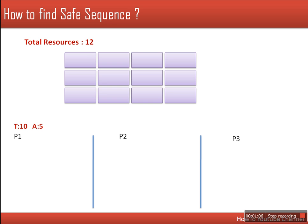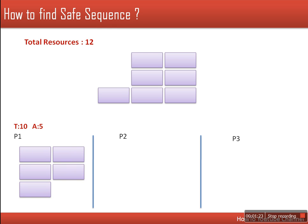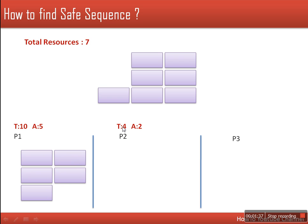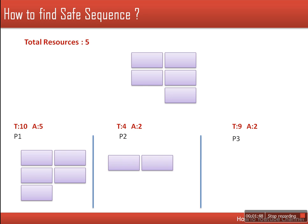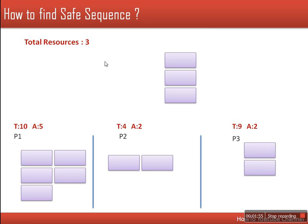In the pictorial representation of this scenario, we are considering a single type of resource. Process P1 needs a total of 10 resources but currently has 5, so out of 12, 5 is allocated to P1, leaving 7 remaining. For P2, it totally needs 4 but currently has 2, so out of 7, 2 will be allocated to P2. Similarly, P3 totally needs 9 but currently has 2.